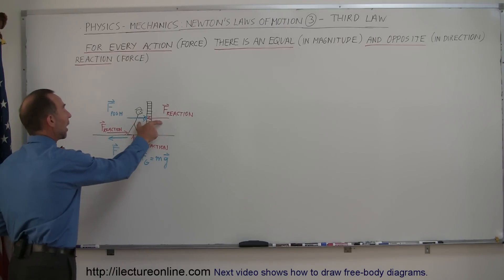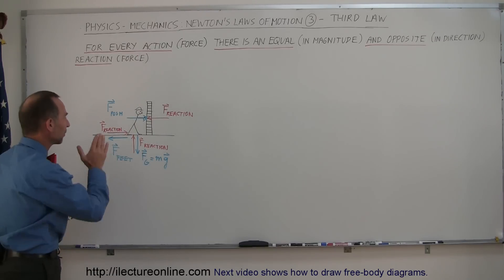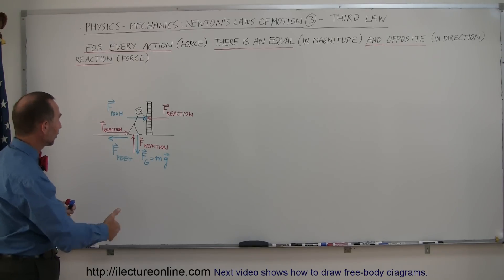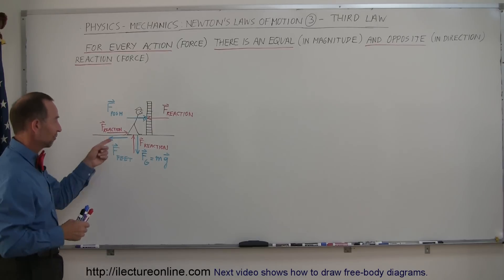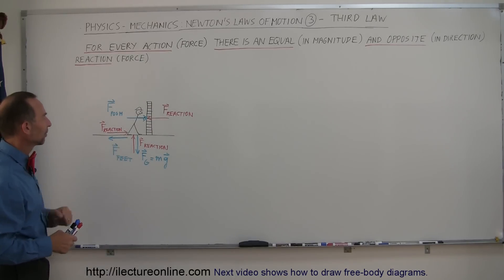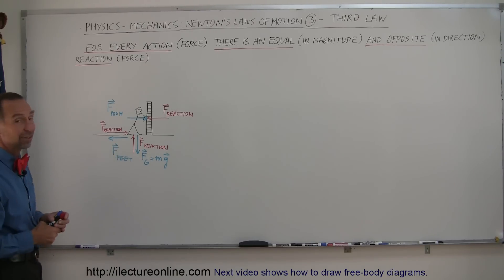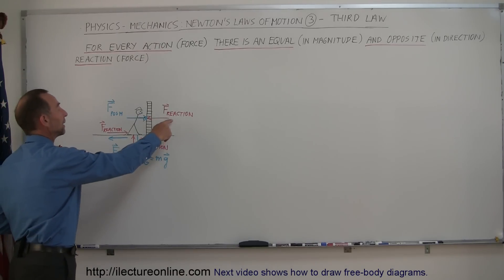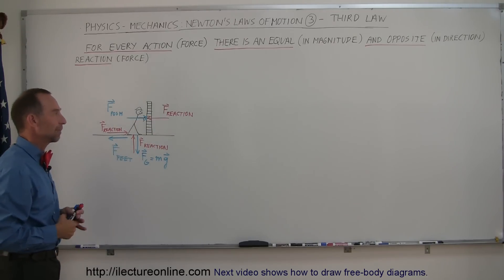Because all these forces are equal and opposite — equal in magnitude, opposite in direction — there's no net force acting on the person, and the person remains in place, consistent with Newton's second law: if F net equals zero, there's no acceleration. Of course, if you put roller skates on the person and they push the wall, the person starts rolling back and experiences acceleration, because there's nothing to cancel out the reactionary force of the wall, and the person simply slides backwards. This is a good example of how to apply Newton's third law.